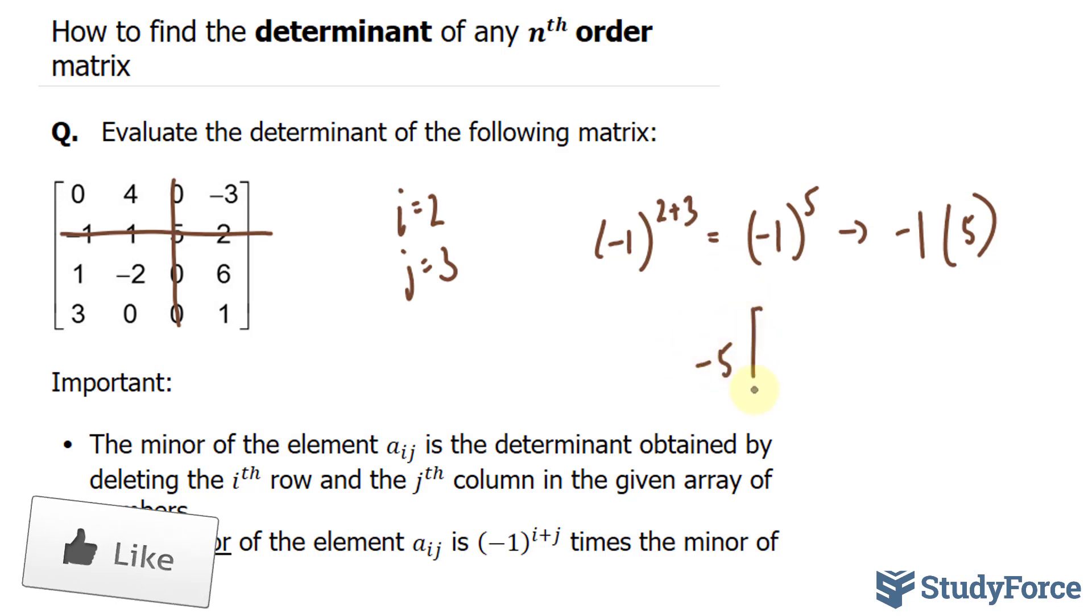I'll multiply this to 0, 4, negative 3, 1, negative 2, 6, 3, 0, and 1.